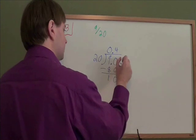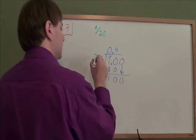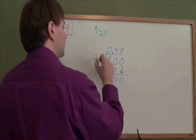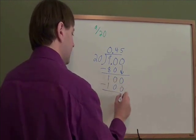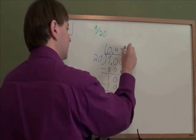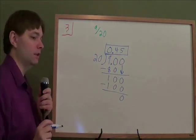And we still have things left, so we add another zero. Bring it down. How many times does 20 go into 100? It goes in five times. 20 times 5 is 100. And now all of that cancels out. We have a zero there, and we are done. Our answer is 0.45. That is the decimal form of 9 twentieths.